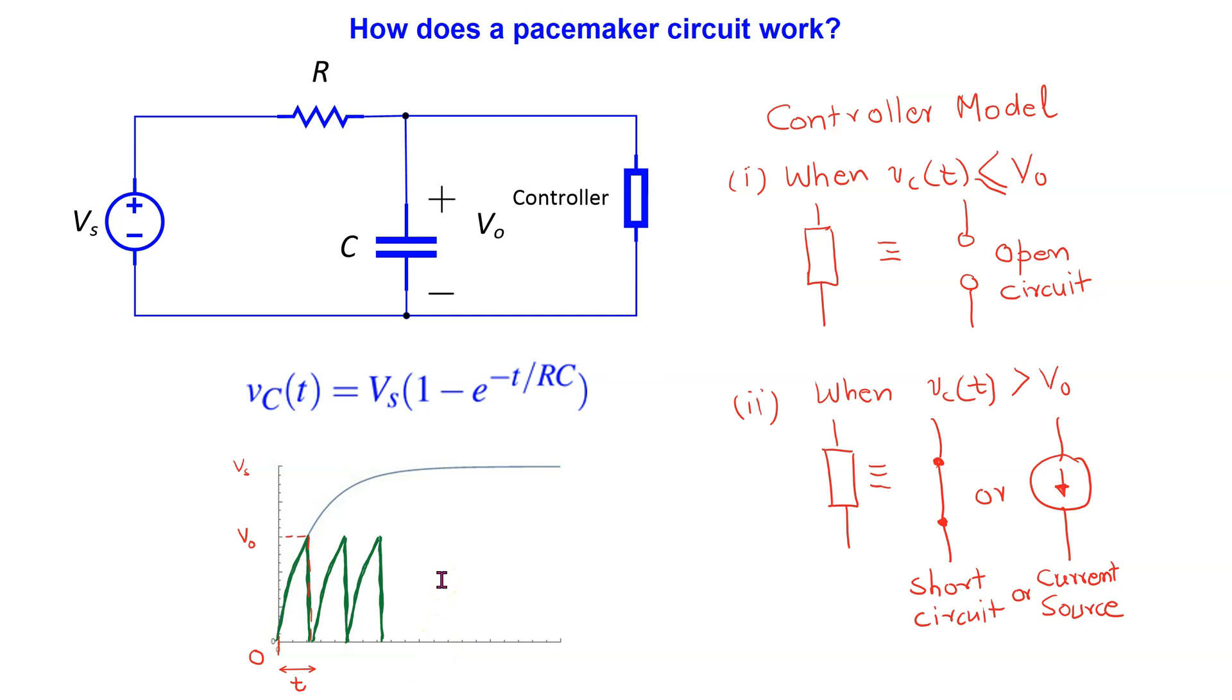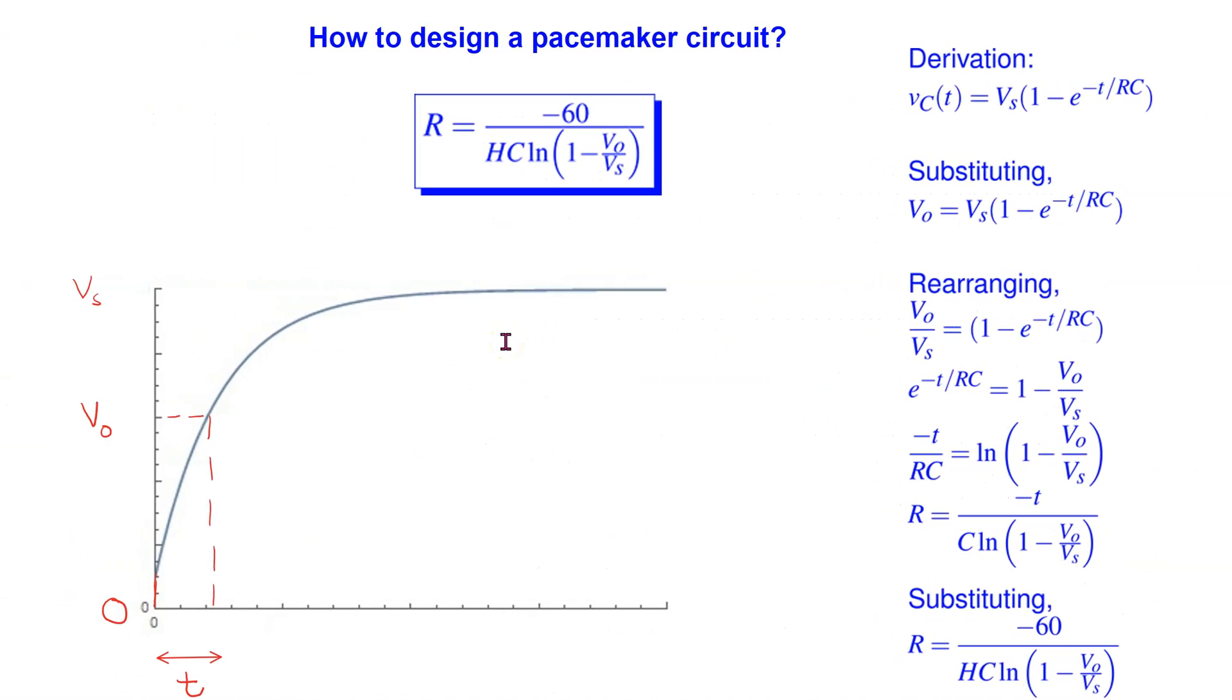This cycle of the capacitor charging and discharging establishes the periodic electrical impulses needed for the pacemaker to work. The design of a pacemaker circuit is achieved via this equation shown here. This equation calculates the resistance needed to achieve a desired heart rate H in beats per minute, where C is the capacitance, Vs is the voltage source, and V0 is the capacitor voltage at which the controller switches its mode. This equation, which is available in standard textbooks, can be easily derived as shown here.